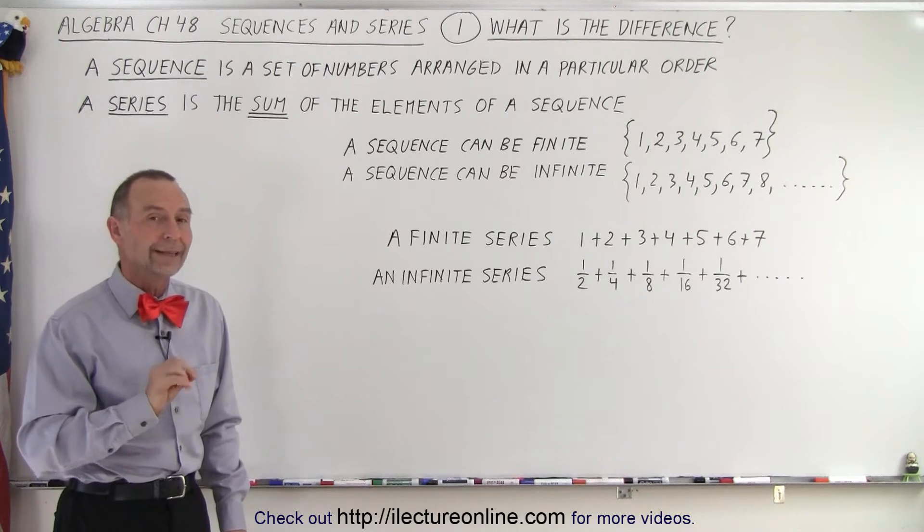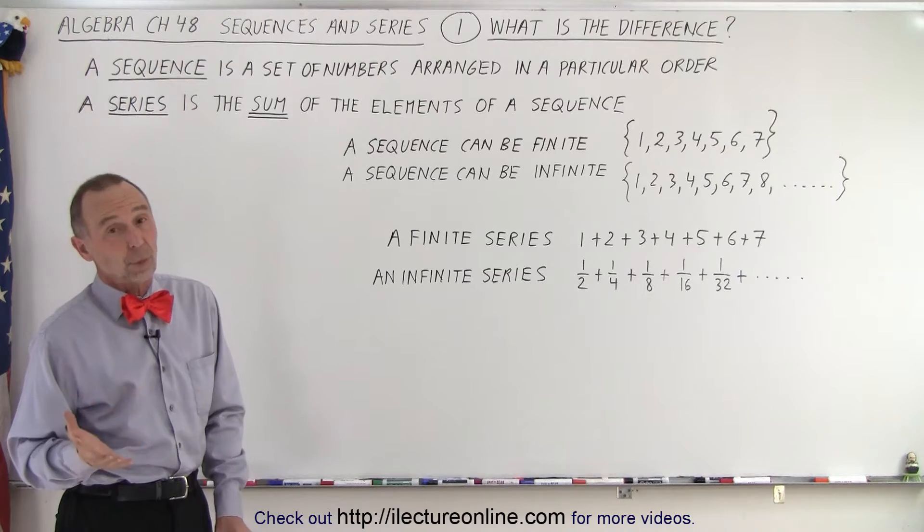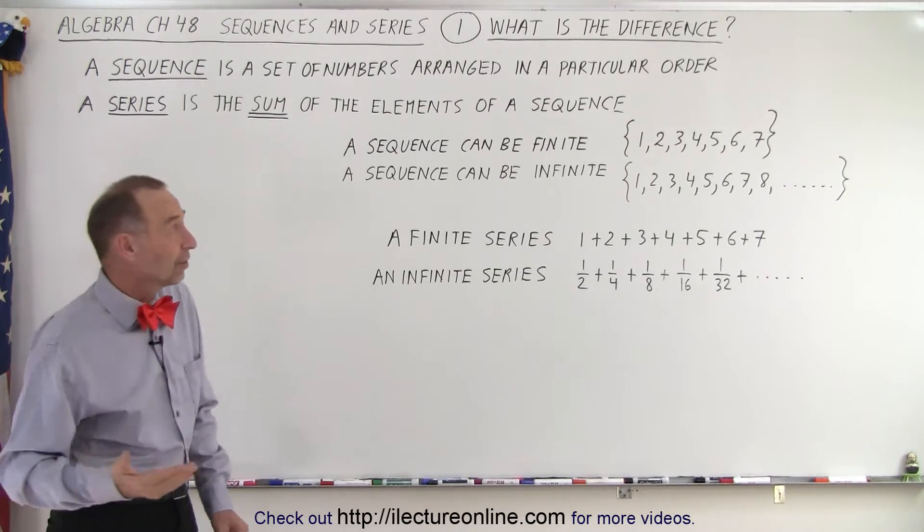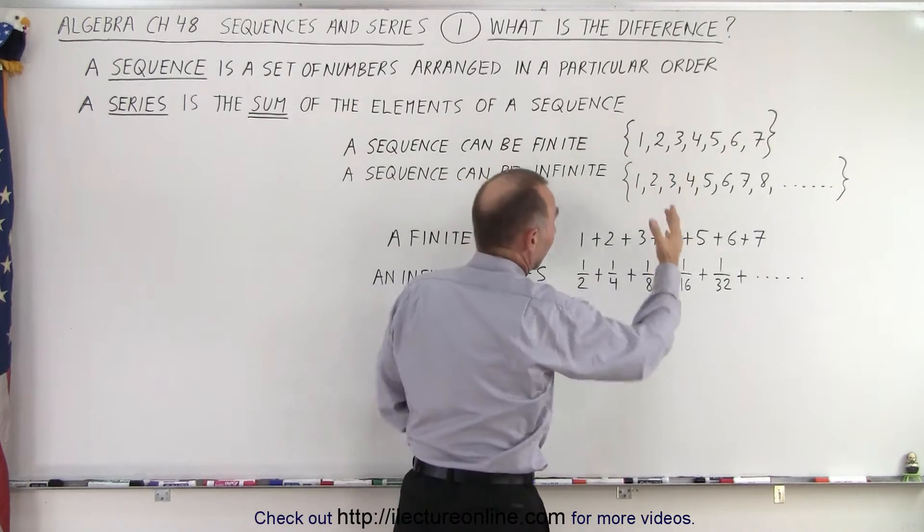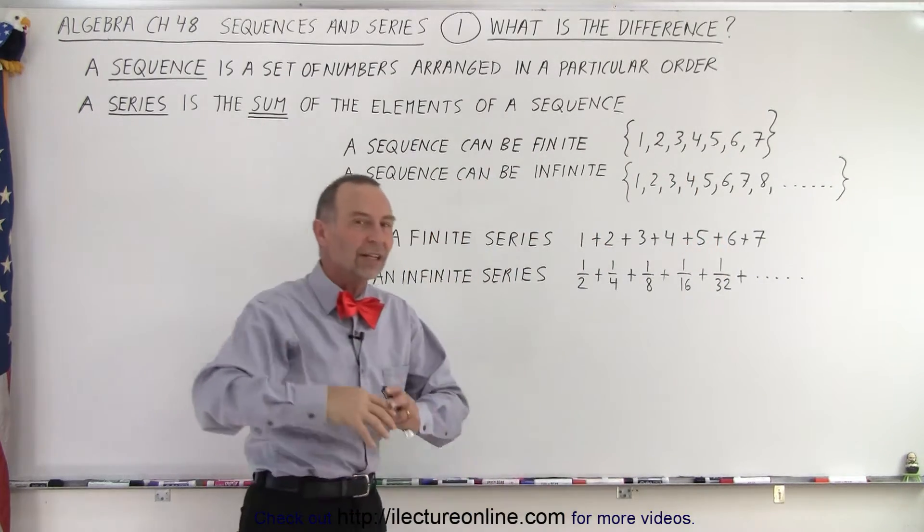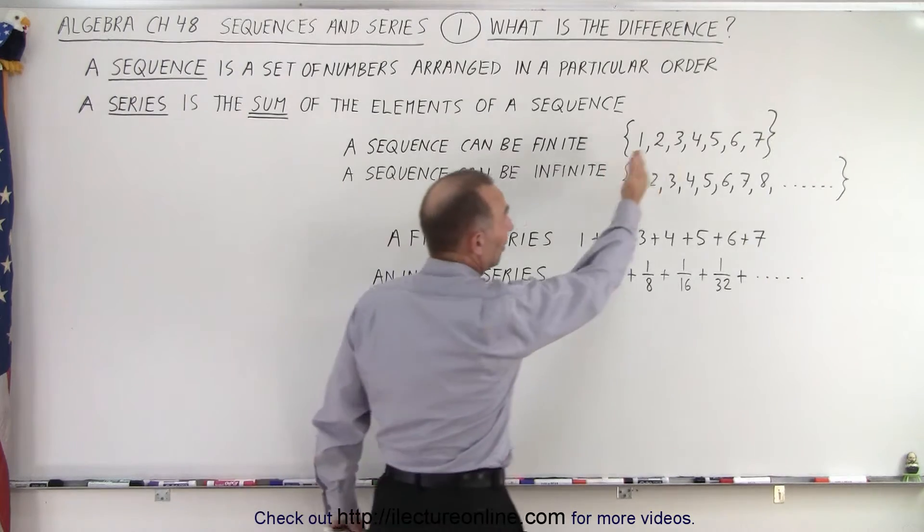We also should know that there are what we call finite and infinite sequences, as well as finite and infinite series. A finite sequence is simply a set of numbers that are limited in quantity. There's not an infinite number of them. There's just a certain number of them. In this case, there's seven of them.